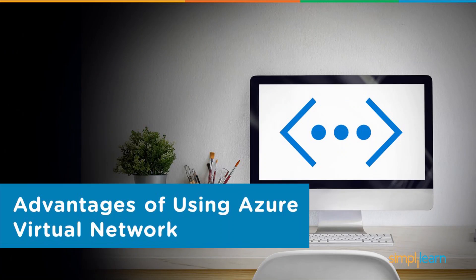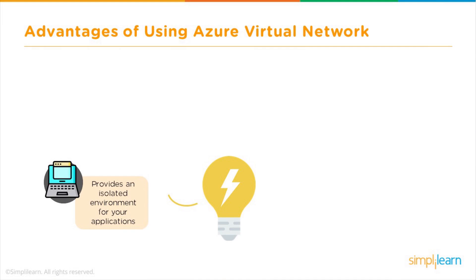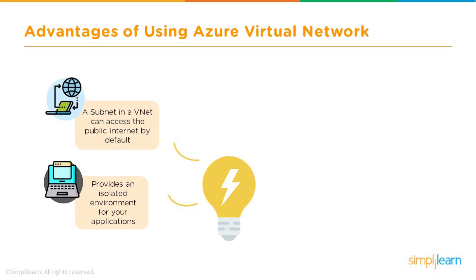The advantages of using Azure Virtual Network include: it provides an isolated environment for your application — it feels like you are working in your on-premises environment within your own data center, but ideally it is a virtual space allocated to you, specifically designed for your tasks and activities. Additionally, a subnet in a VNet can access the public internet by default, so public network connectivity is enabled in the virtual network.